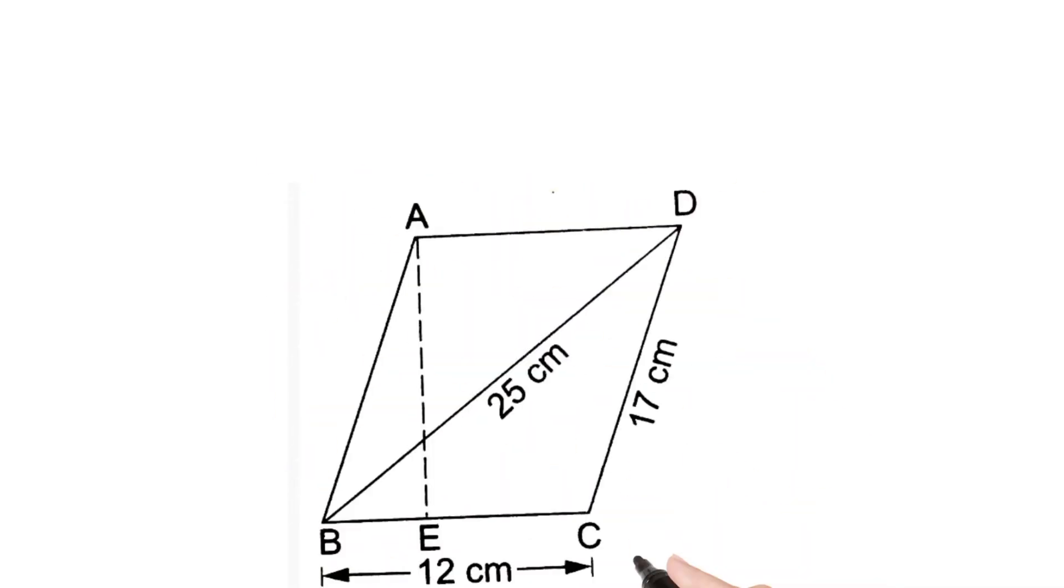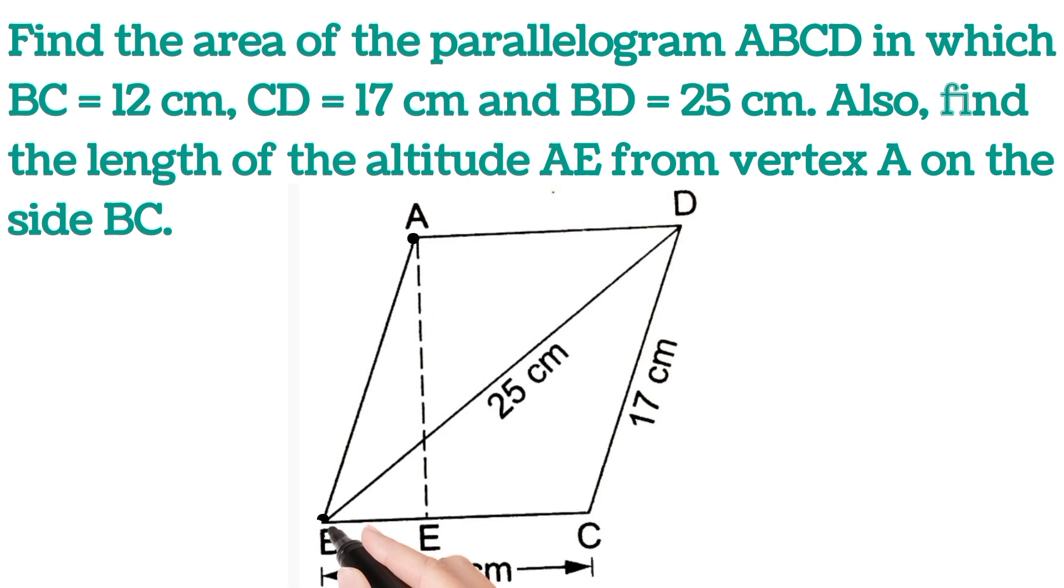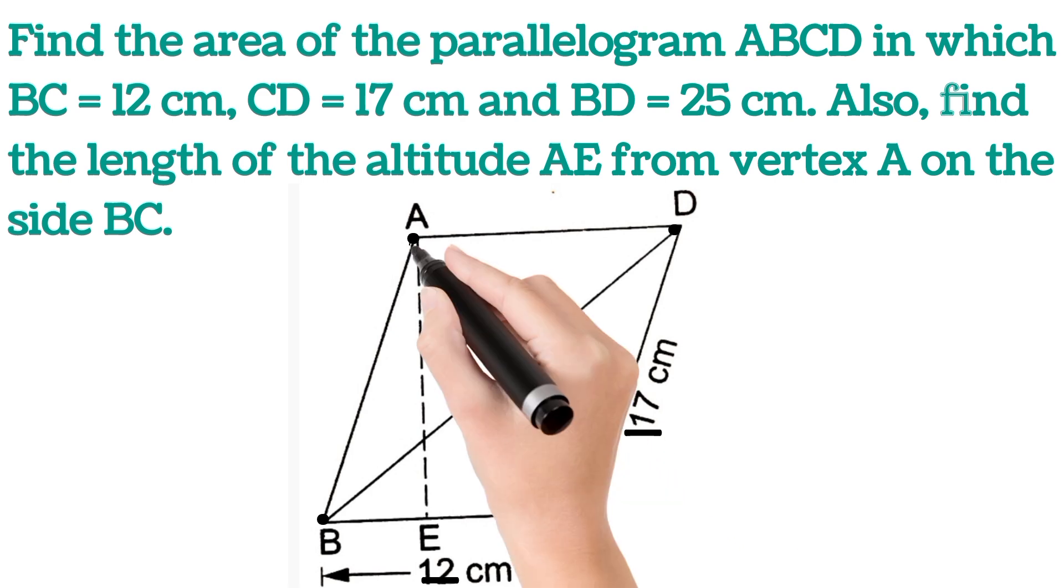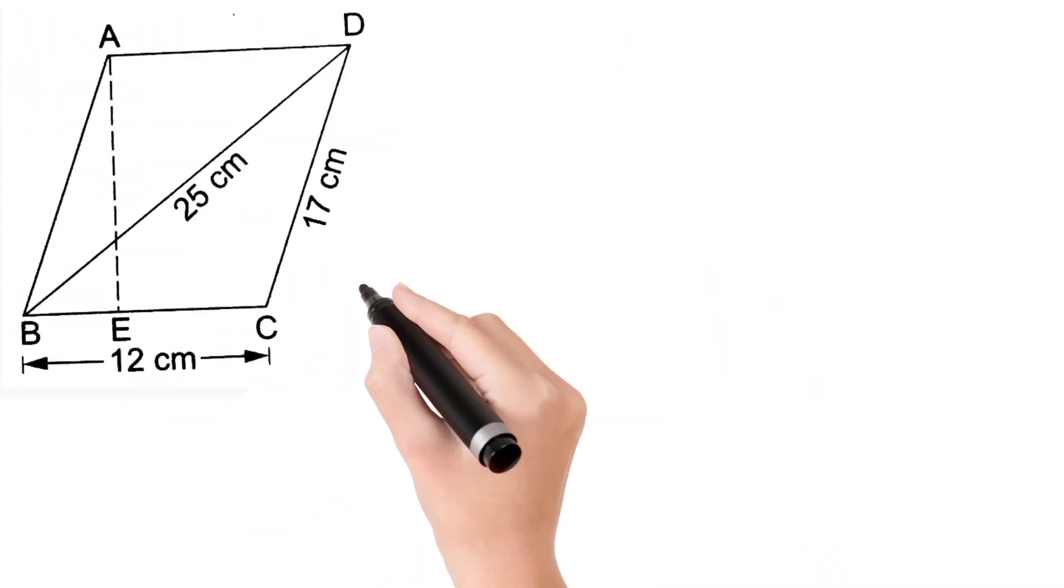Hello everyone, welcome back. Here is another competitive exam question in which it's given ABCD is a parallelogram. BC is 12 centimeters, CD is 17 centimeters, and BD is 25 centimeters. Then find the length of altitude AE. So let's see how to solve this question. This is the given figure.